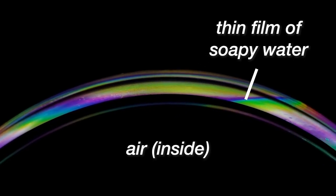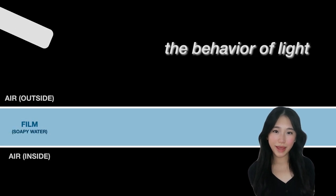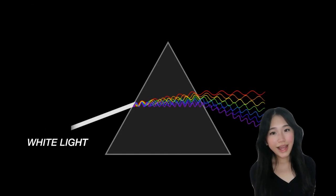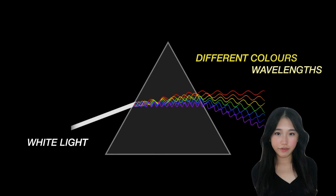The soap bubble is made up of a thin film of soapy water with air trapped inside. Now let's zoom in on this and investigate the behavior of light. White light is made up of different colors of different wavelengths.